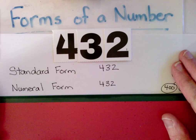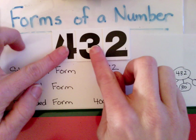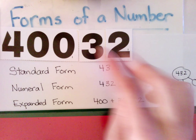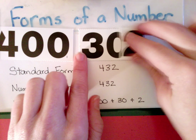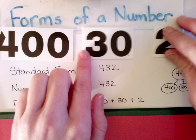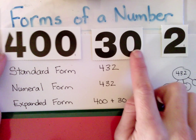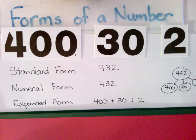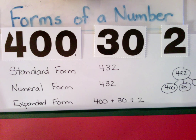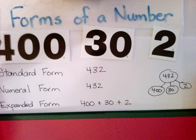Another form is expanded form. We see that 432 is made of 400, 30, and 2. Expanded form lets us see the quantities, the value, of each of those digits rather than only seeing the digit. You can represent that with a number bond, such as the one shown here.